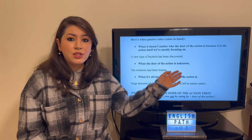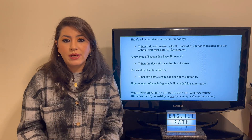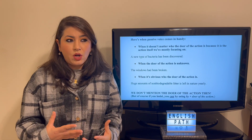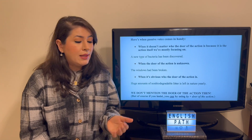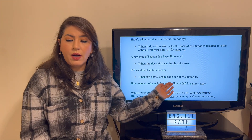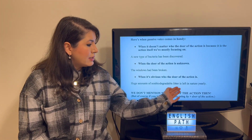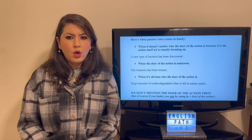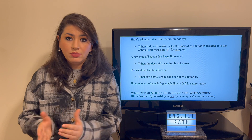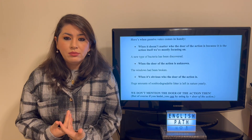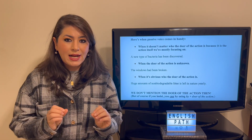Or when the doer of the action is unknown — like in reporting criminal cases and things that are mysterious, like 'the windows had been broken.' We don't know who had broken them. Or when it is obvious who the doer of the action is, like 'huge amounts of non-biodegradable litter is left in nature yearly.' Who leaves it? We do — we human beings. It's obvious, and that's when we don't mention the doer of the action in our statement.